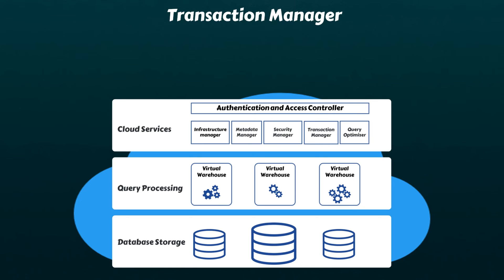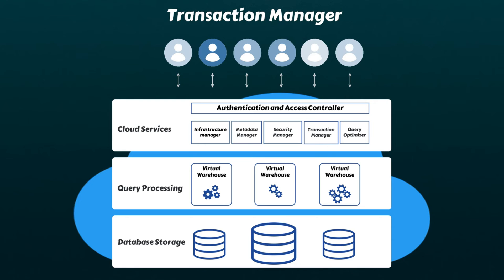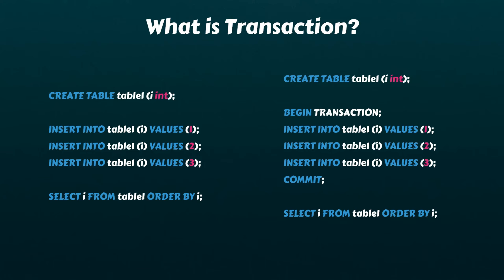Next in line is the Transaction Manager. Imagine a large project environment where multiple users often need to concurrently access and even modify data within the same table — this is where the Transaction Manager becomes essential. Typically, a transaction is a sequence of one or more SQL statements that are treated as a single unit. On the left side, we have five SQL statements without explicit Begin Transaction and Commit statements; in such cases, each statement is treated as an individual transaction and committed immediately after execution. On the right side, we have used Begin Transaction and Commit statements to group all insert statements as a single transaction. If one of the statements within a transaction fails, the entire transaction is rolled back.